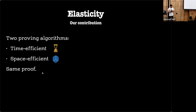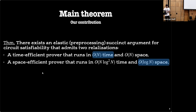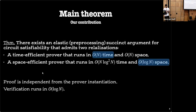We build on top of this model and introduce the idea of elasticity. Elasticity means you have a proving algorithm with two different implementations: one time-efficient, one space-efficient. The verifier doesn't care which setup was used. We propose a proof system for circuit satisfiability with two realizations: one linear time, one log space. The proof is independent of the configuration, and verification runs in log time. Additionally, you can switch from space-efficient to time-efficient in the middle of the proving execution.